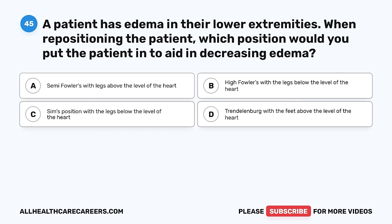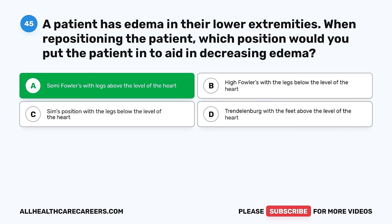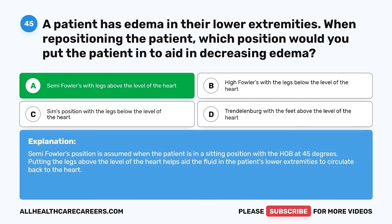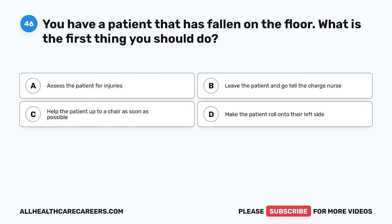Question 45. A patient has edema in their lower extremities. When repositioning the patient, which position would you put them in to aid in decreasing edema? A. Semi-Fowler's with legs above the level of the heart. B. High-Fowler's with legs below the level of the heart. C. Sims position with legs below the level of the heart. D. Trendelenburg with feet above the level of the heart. The correct answer is A, Semi-Fowler's with legs above the level of the heart. Semi-Fowler's position is assumed when the patient is in a sitting position with the HOB at 45 degrees. Putting the legs above the level of the heart helps aid the fluid in the patient's lower extremities to circulate back to the heart.